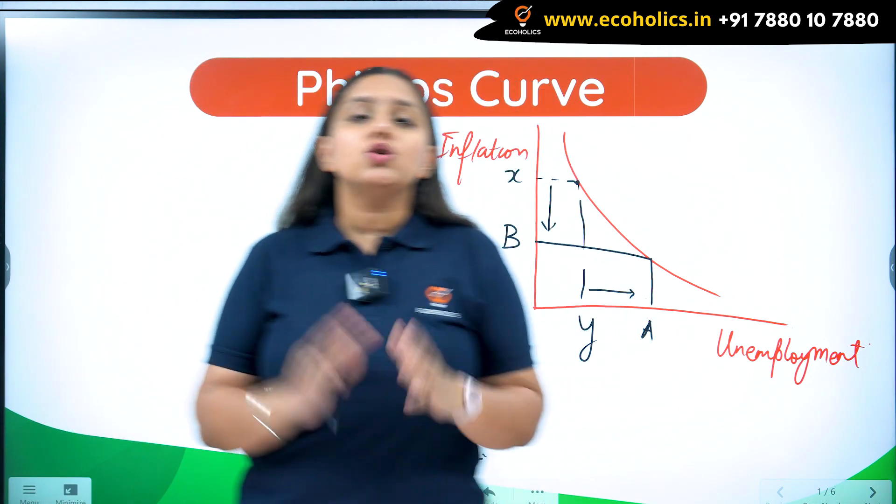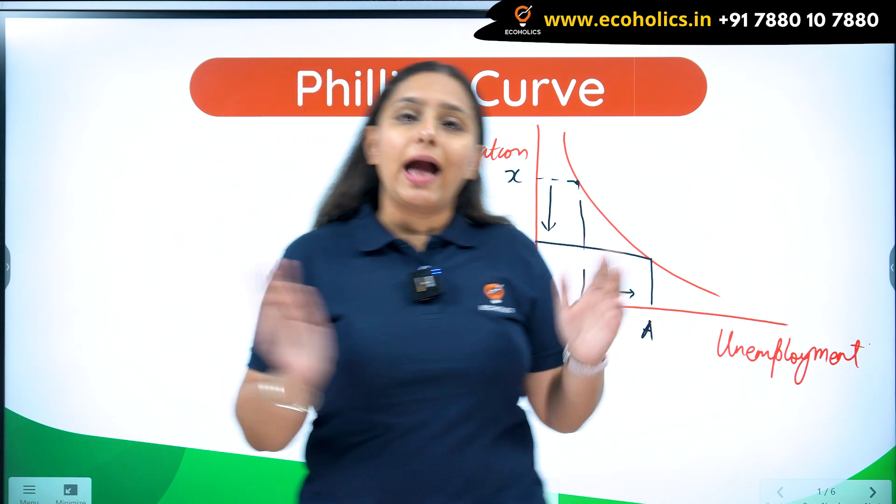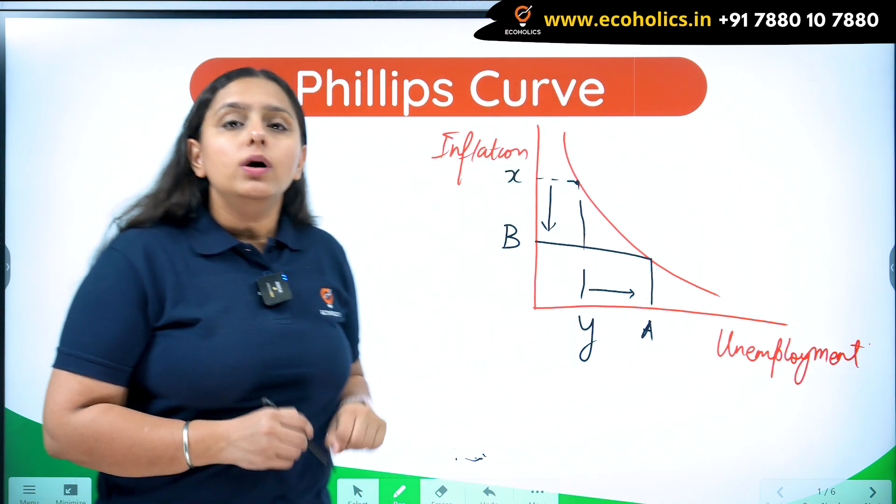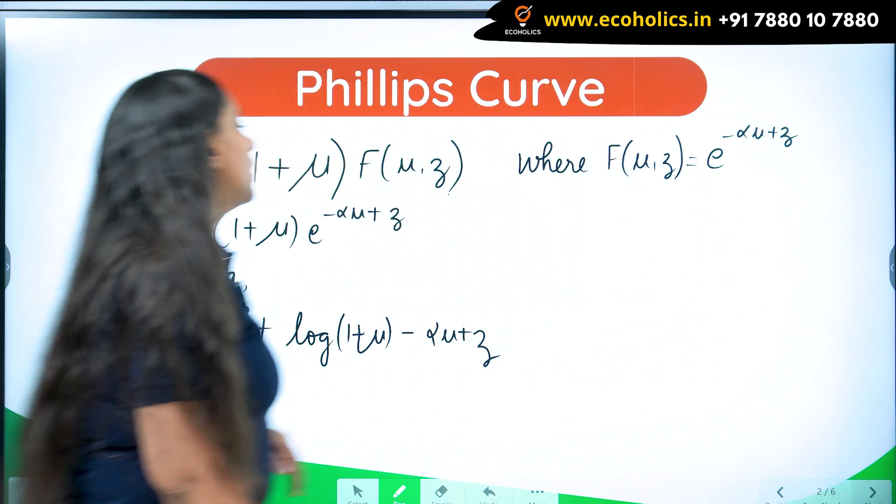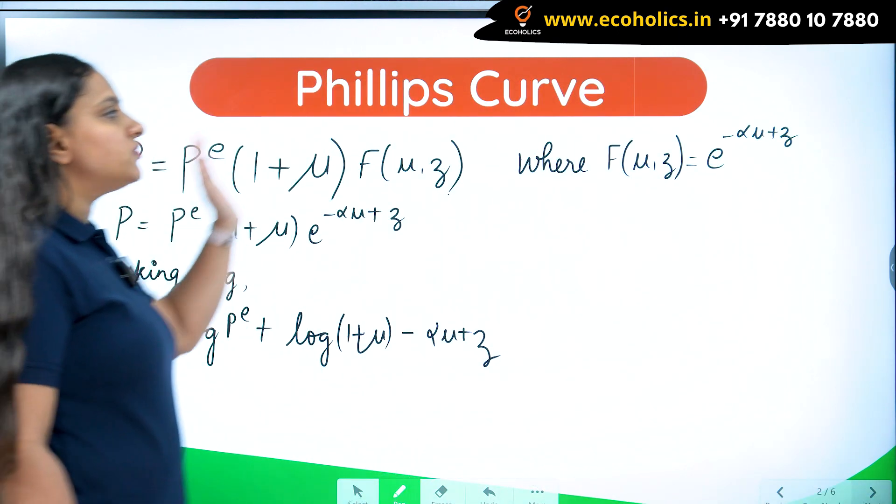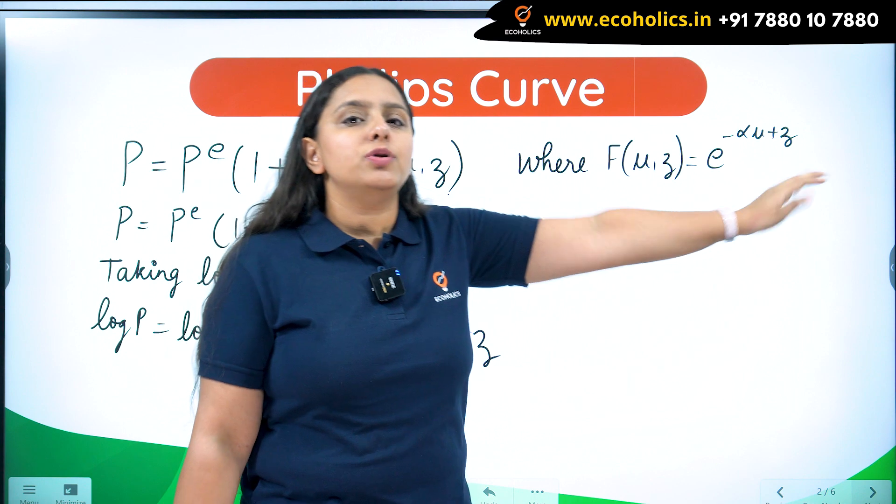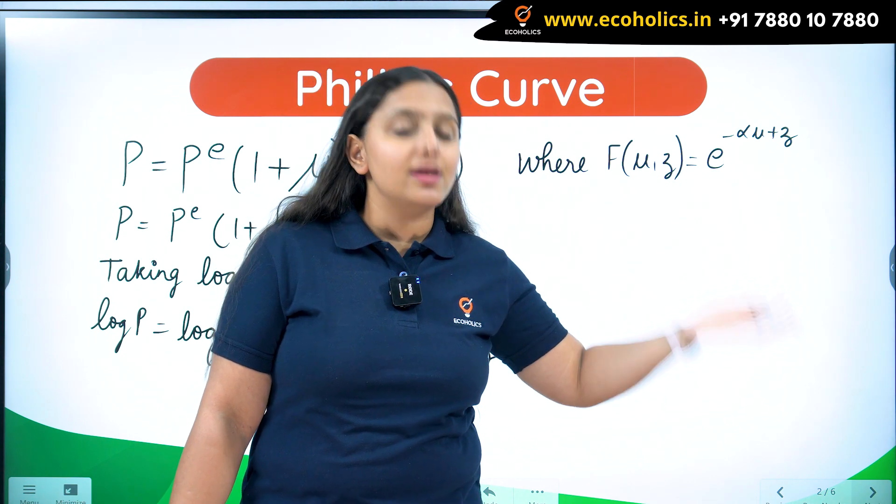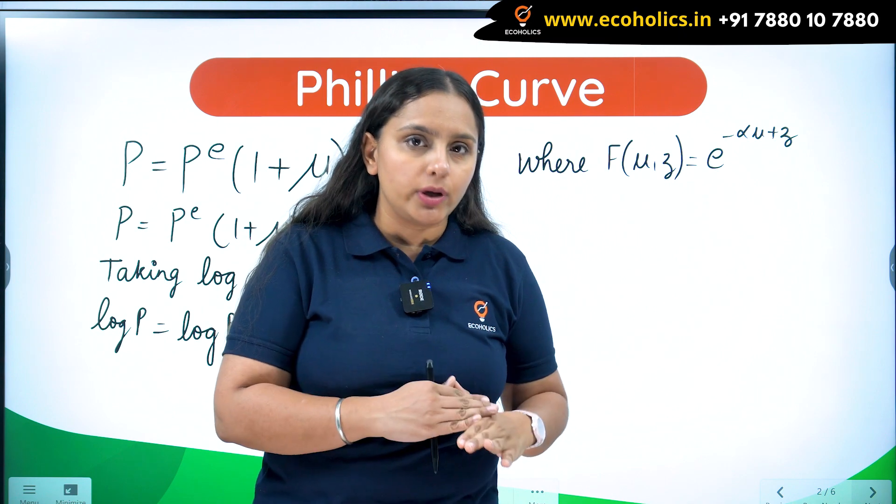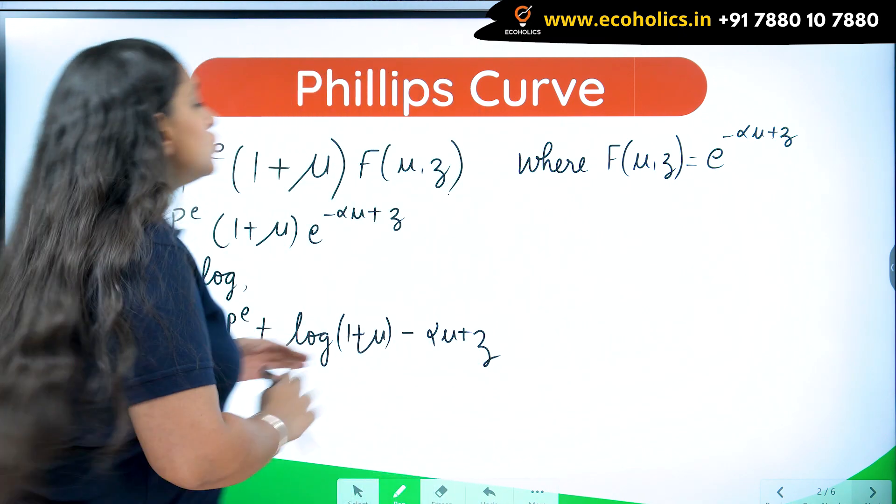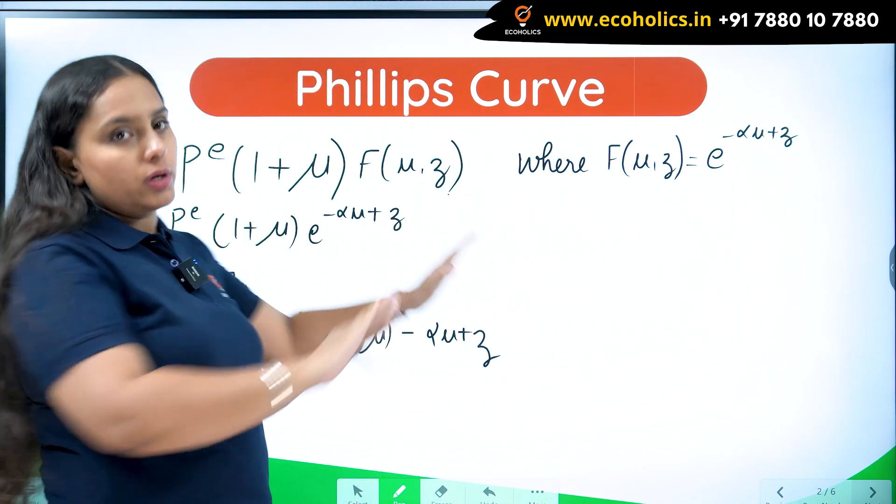This is the interpretation of Phillips curve. It's only talking about inflation and unemployment. Let's see how we get our mathematical results from this. Because Phillips curve is telling you the relationship between prices, inflation and unemployment, the starting point is to talk about prices.